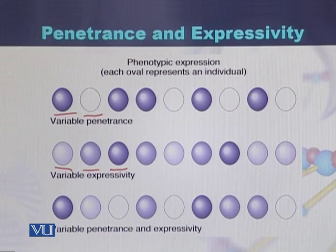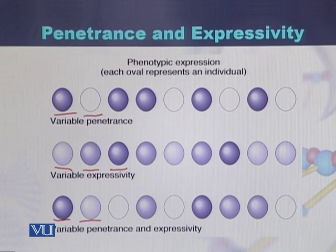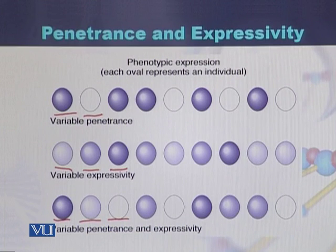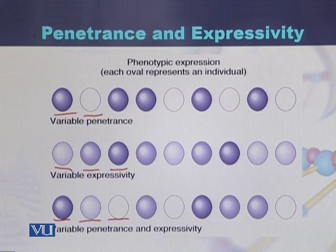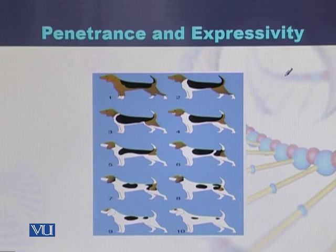Combining penetrance and expressivity, some cells will be dark blue, some light blue, and some will have no color at all. This combination is seen in certain animals and plants and in certain human diseases, such as Waardenburg syndrome, in which individuals have white hair at the forehead. In this diagram we can also see dogs with different penetrance and expressivity.